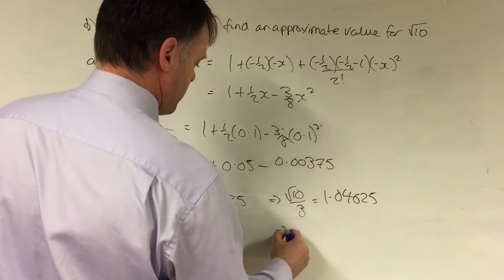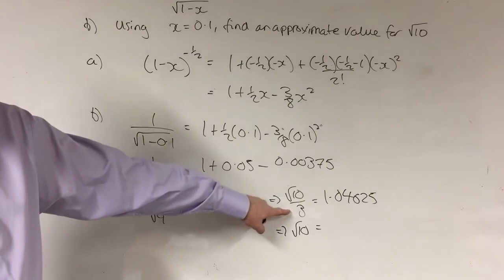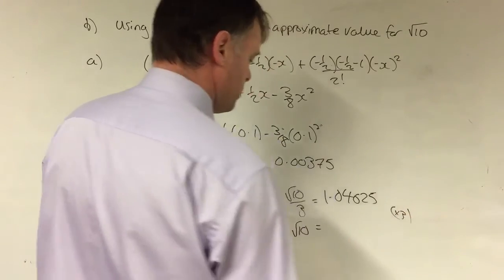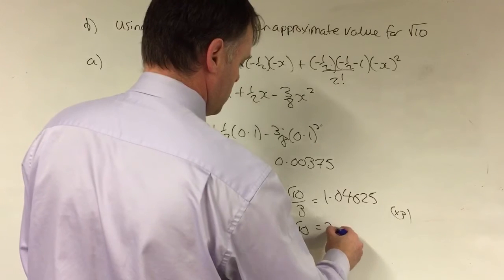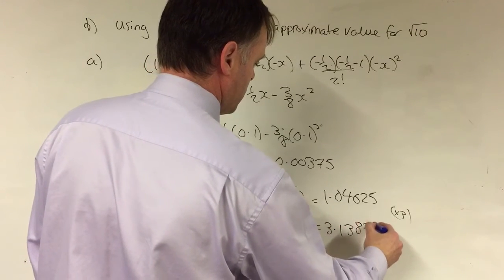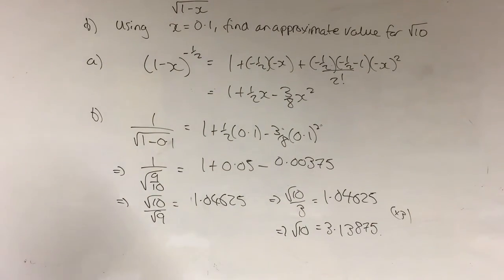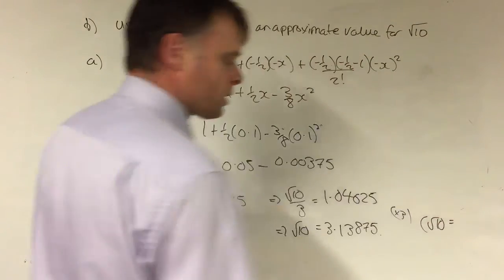To get the square root of 10, we have root 10 over 3 equal to 1.04625. I want the square root of 10 by itself, so I multiply both sides by 3. Can you do that calculation for me? The result is approximately 3.1 — let's say 3.13875. So the square root of 10 is approximately 3.14.